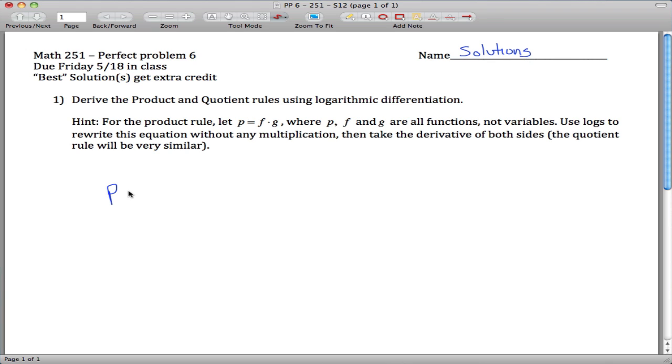So basically for the product rule, we want to say if we have some function that is really, we'll call it P for product, just the product of two different functions, and what we want to know is what the derivative of this guy is.